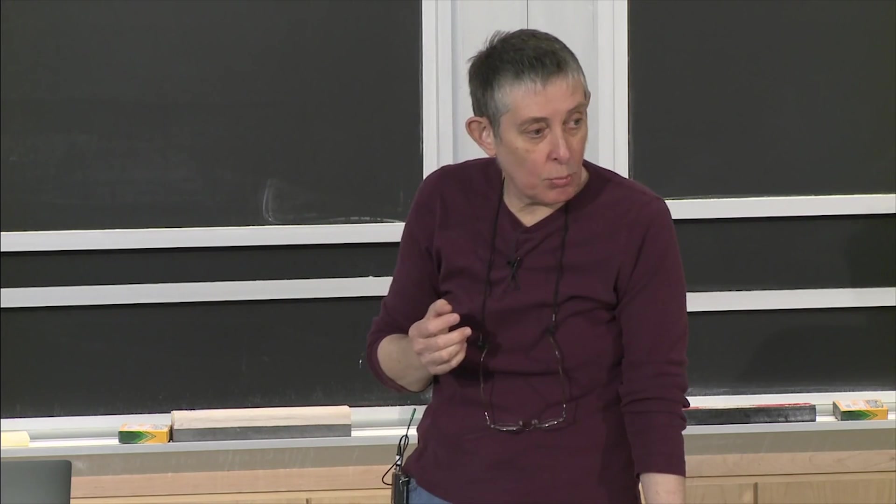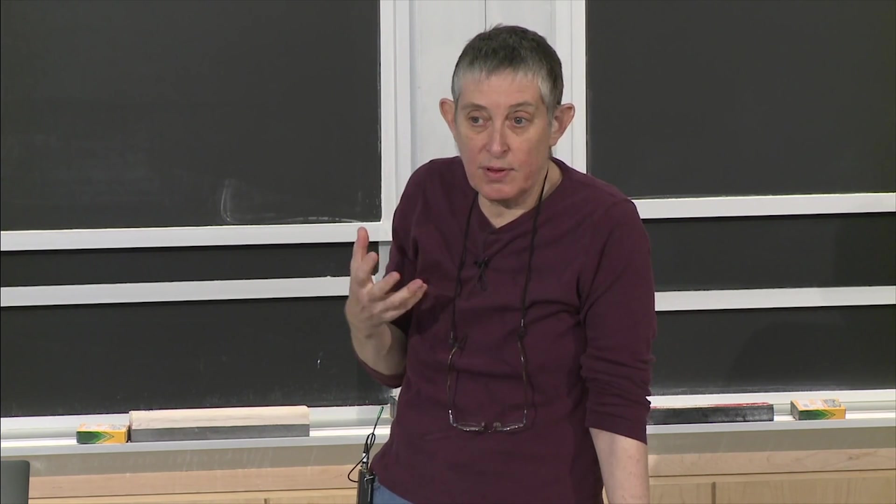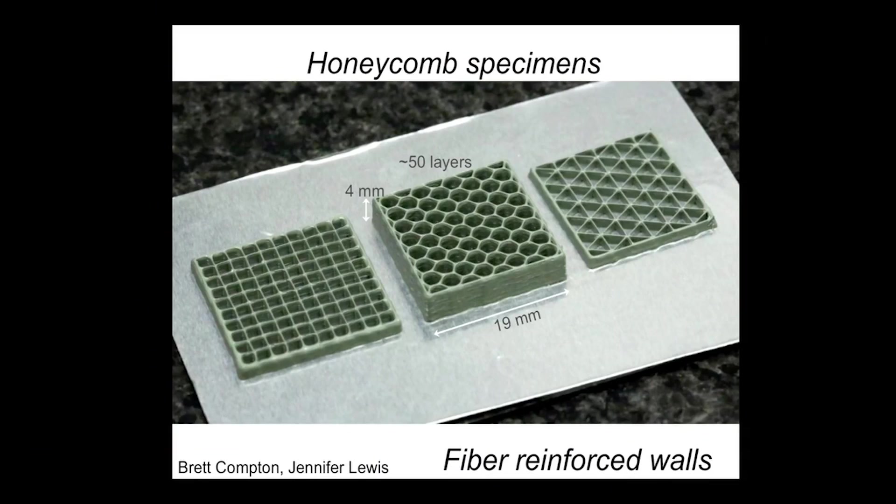More recently, they've got a technology now where they're rotating the nozzle as they print the honeycomb. As they rotate the nozzle, they get some change in the orientation of the fiber. They're beginning to be able to make honeycombs that are fiber reinforced, and they can get the fibers aligned with the prism axis of the honeycomb, which is more or less what the wood does. They're beginning to make honeycombs that have the same sort of structure on the cell wall level as the wood composites have.